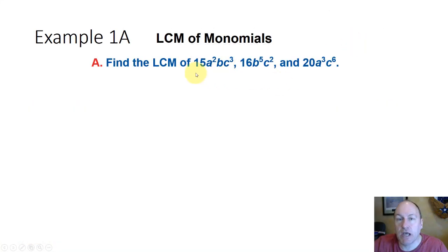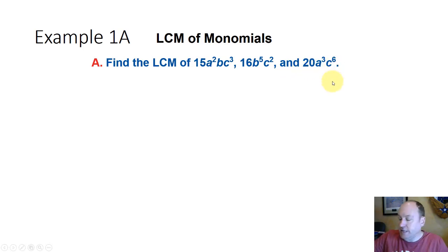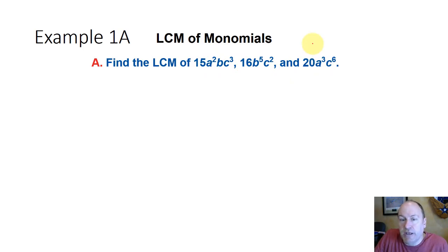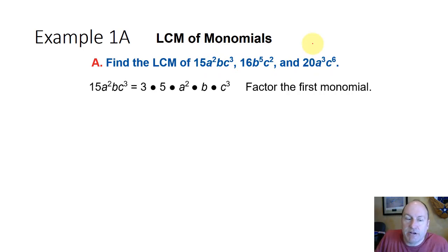To find the lowest common multiple of 15a squared b c to the third, 16b to the fifth c squared, and 20a to the third c to the sixth, we need to look at all the different factors of each and then get the largest version of each of those factors.